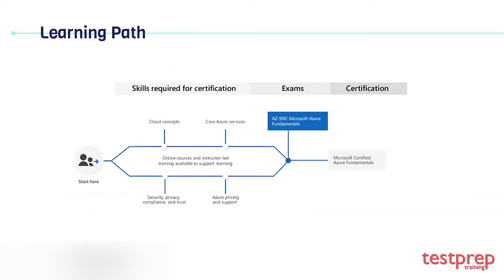AZ-900 exam tests your knowledge based on primarily four learning paths. It caters to general cloud concepts, together with an understanding of the foundational aspects and benefits of Microsoft's cloud including subscriptions offered and available support plans. It also covers understanding the difference between infrastructure as a service, platform as a service and software as a service, and identifying the services to use as per the requirement. Having an understanding of systems administration concepts like enforcing policies and using role-based access control (RBAC) across Azure tenancy is also beneficial.